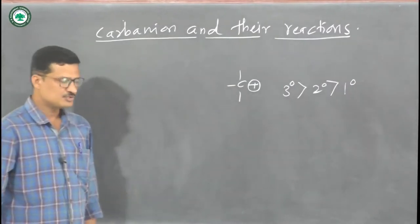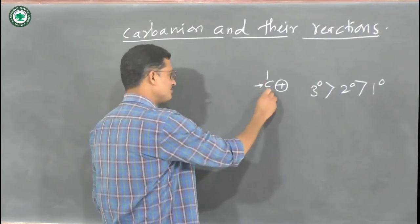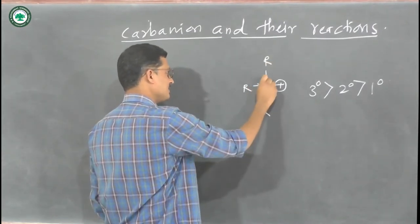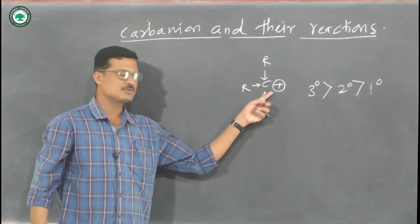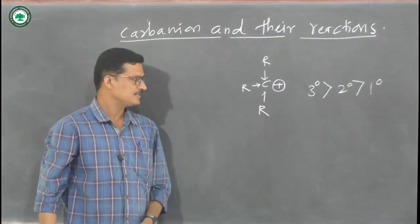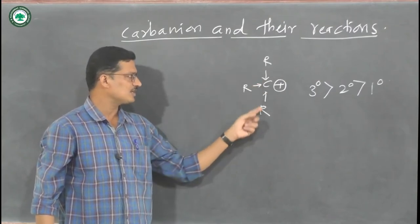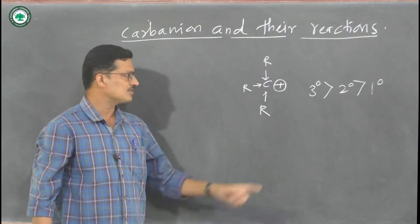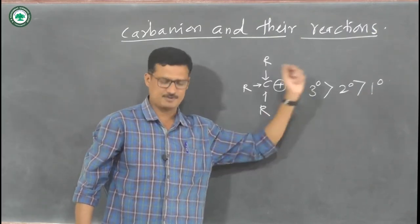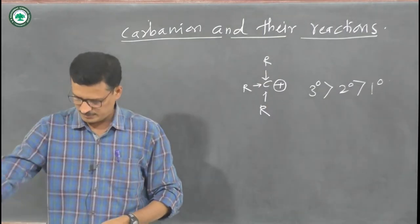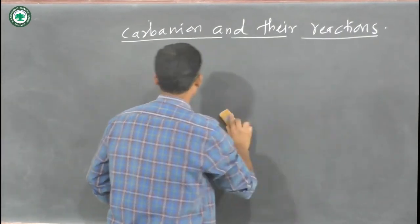When electron-donating groups — such as alkyl groups — are attached to the carbocation, the stability of that carbocation increases due to the dispersion of charge. So that is why the tertiary carbocation is more stable than secondary, then primary, then the methyl carbocation. That was regarding carbocations, but in this chapter we will think about carbanions.